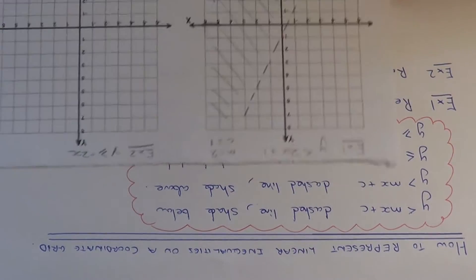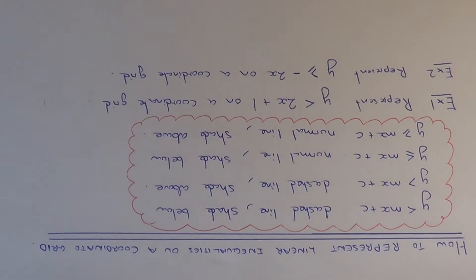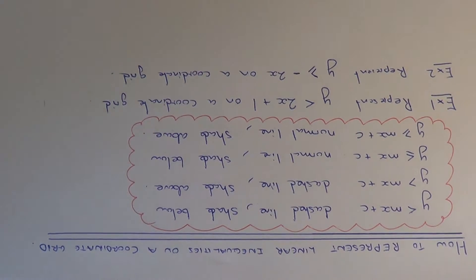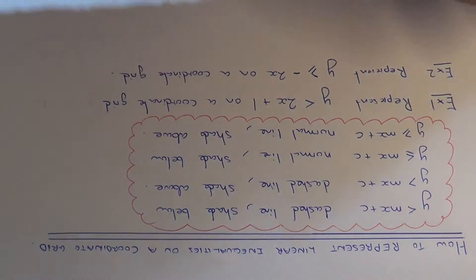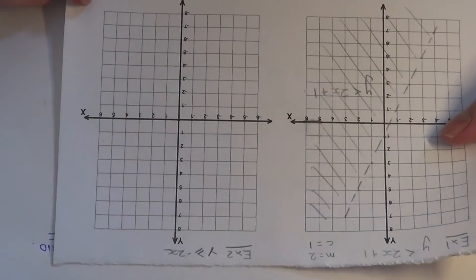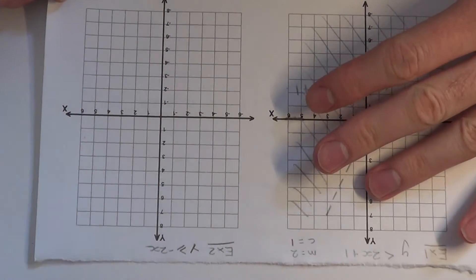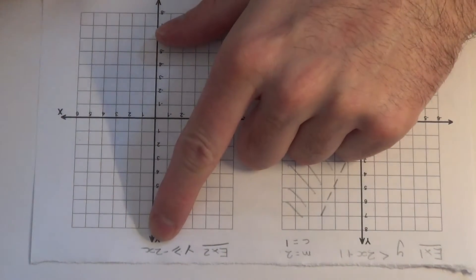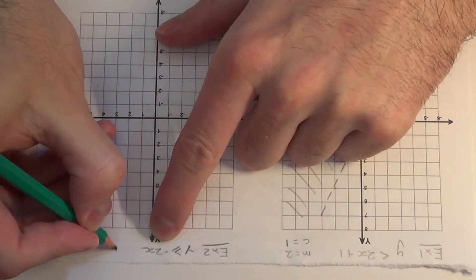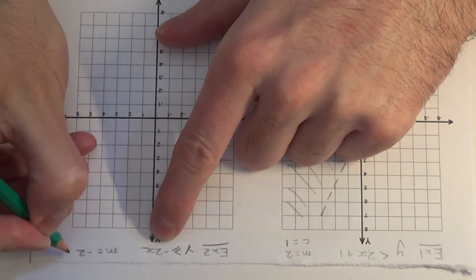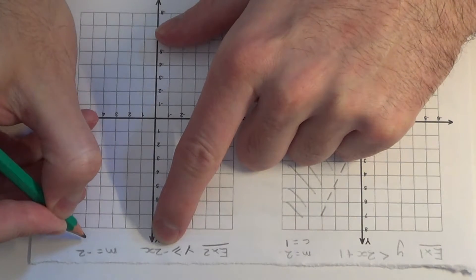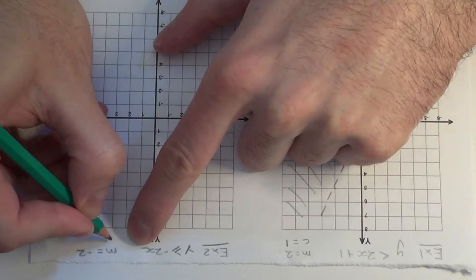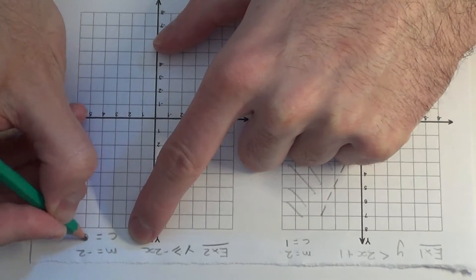So let's move on to our second example. This time we've got to represent y is more than or equal to minus 2x on a coordinate grid. Again, let's use the gradient and intercept method. This line will have a gradient of minus 2 — that's the number before x — and there's no number at the end, so the y-intercept is 0.